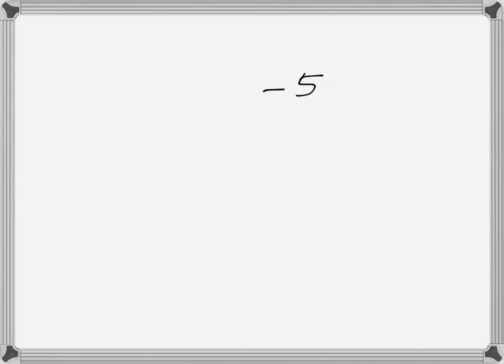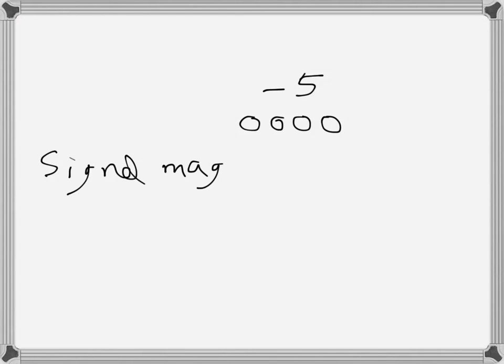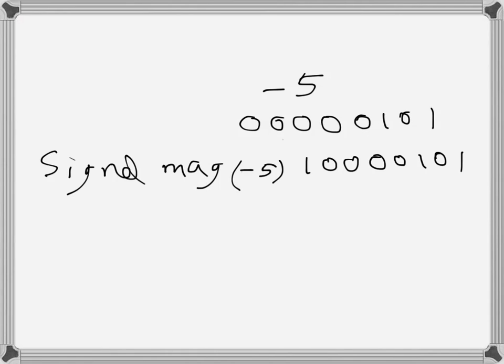Let's do another example. We want to express minus five in eight-bit signed magnitude representation, signed one's complement representation, and signed two's complement representation. First, for signed magnitude: positive five in eight bits is 00000101. So negative five in signed magnitude representation is 10000101 — only the most significant bit is changed to one.